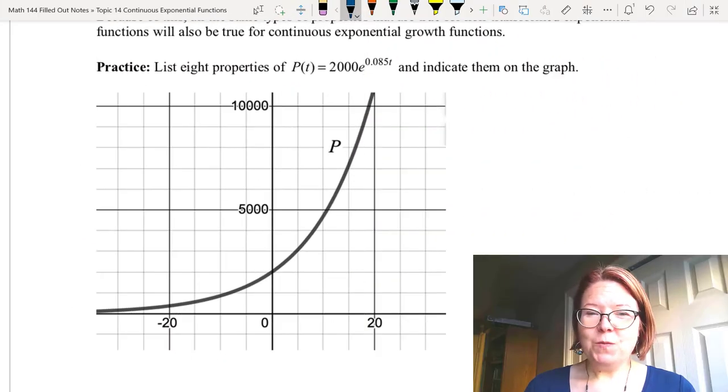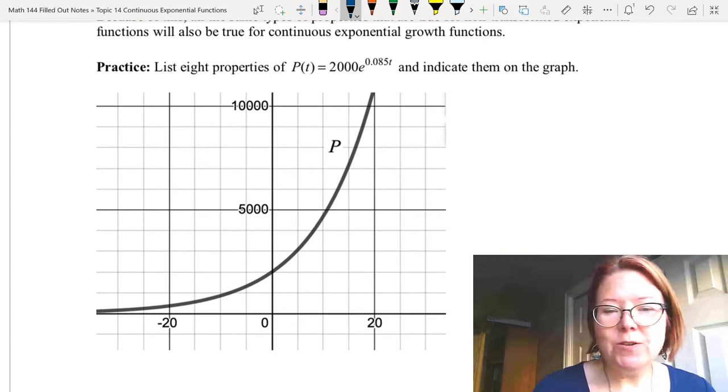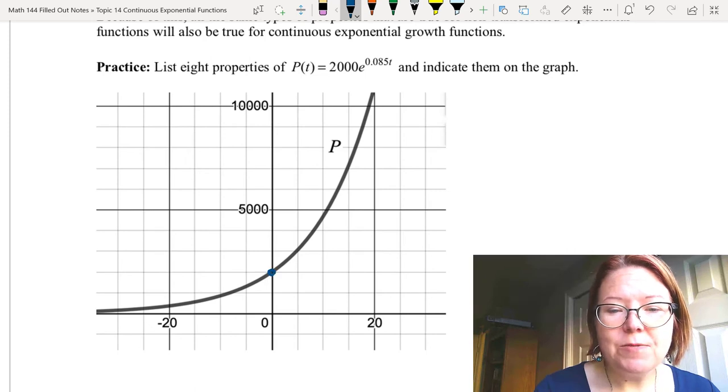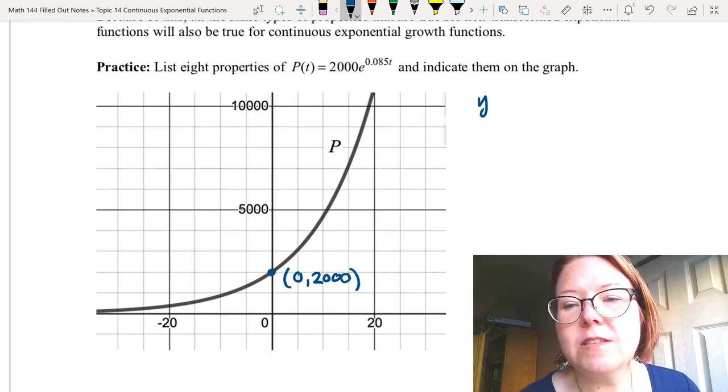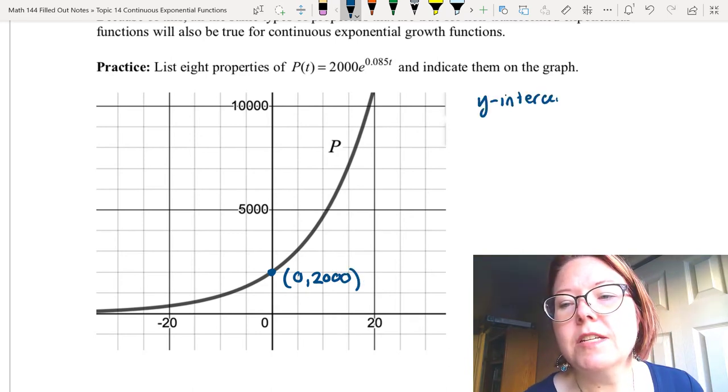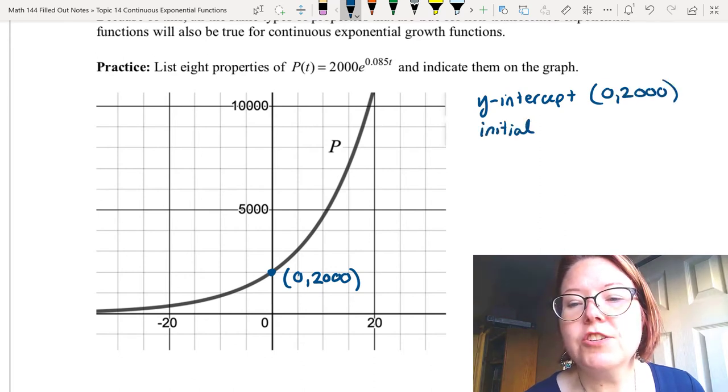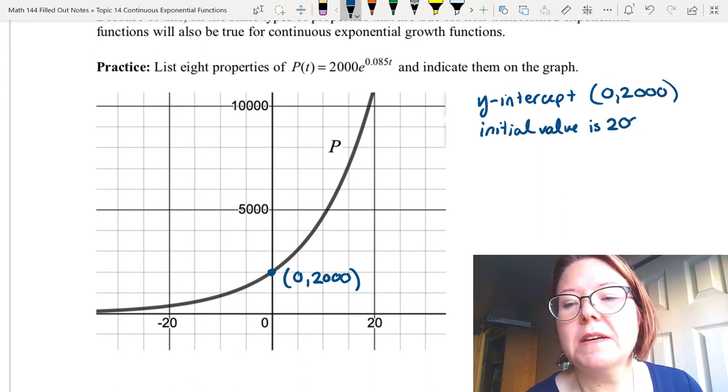All right we're back. I'm gonna go ahead and describe properties as I list them. So the first property I notice is that I have an initial value at 2000 and I'm gonna put that on the graph zero comma 2000 and I can actually write that two ways. I could say the y-intercept is zero comma 2000 or I could say the initial value is 2000.